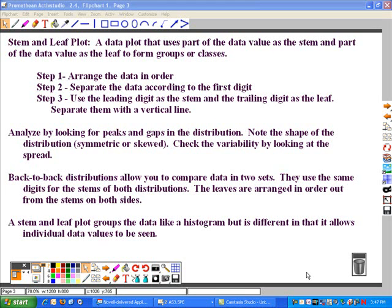They would share a stem, and then you would use the leaf part of one distribution set going toward the right, and those values in the other distribution set going to the left. And then you could compare the two sets and see if one contains higher values, lower values, if one has more gaps than the other, and look at those two different sets.